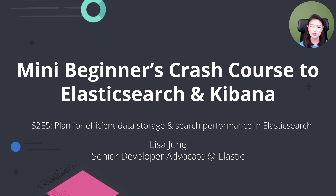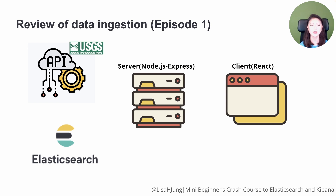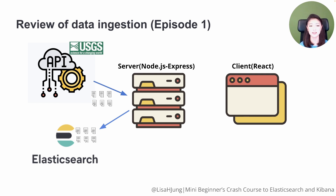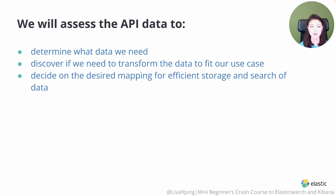In the previous episode, we connected our Node.js server to Elasticsearch hosted on Elastic Cloud. Next, it's time to think about ingesting data into Elasticsearch. For our project, we'll be retrieving the data from the USGS API and ingesting it into Elasticsearch. But before we could do this, we need to plan for efficient data storage and search performance. In this episode, we'll assess the API data to determine what data we need, discover if we need to transform the data to fit our use case, and decide on the desired mapping for efficient storage and search of data.